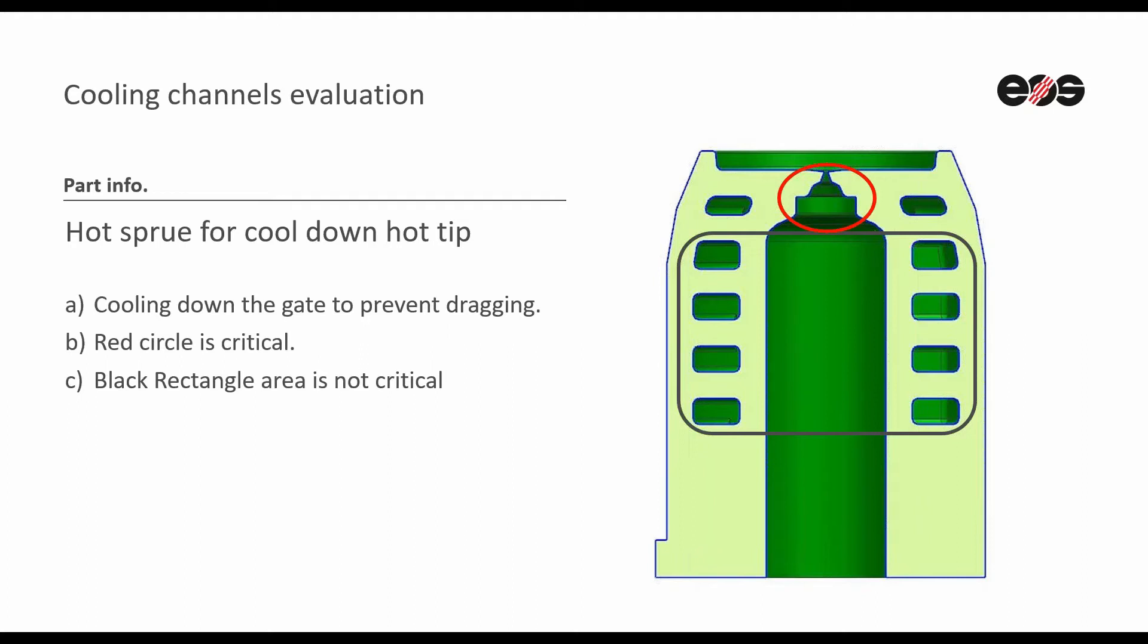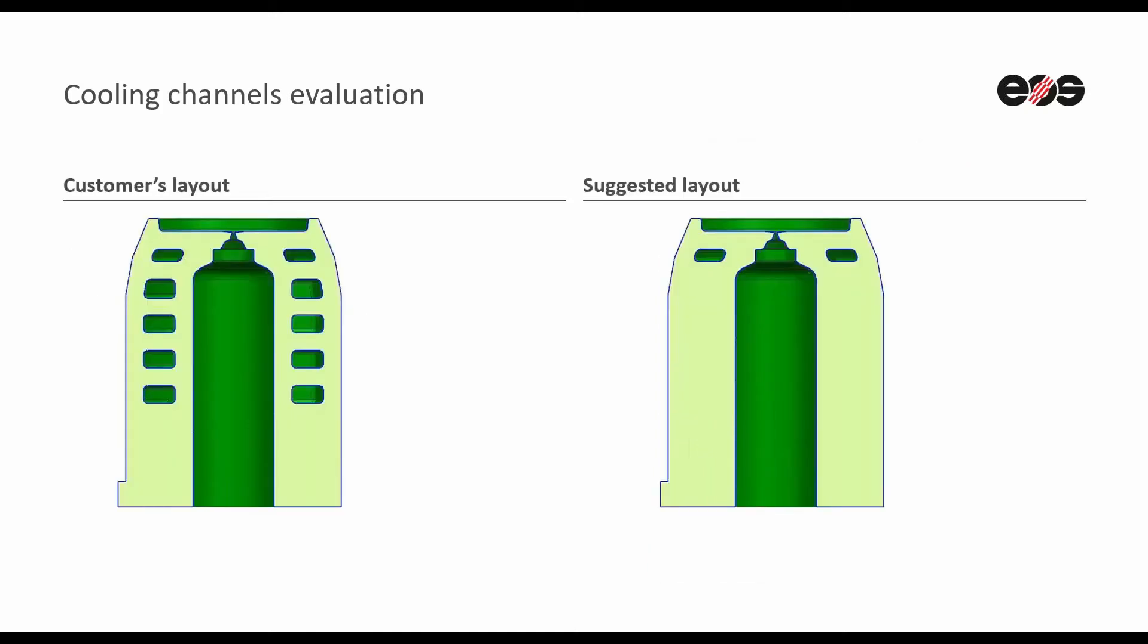The red circle is actually the critical area, while the rest of the area is considered non-critical. This is why we suggested to the customer to design the conformant cooling only on the critical area and remove the unnecessary cooling channels.